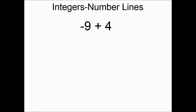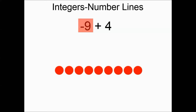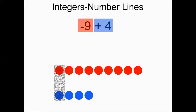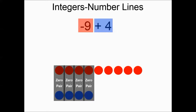Negative nine plus four: the red chips are negative, so we line up nine negative chips, then get four positive chips. A zero pair occurs when you line up a single negative chip and a single positive chip. We had four zero pairs. What's left over? Five negative chips. So your answer is negative five.